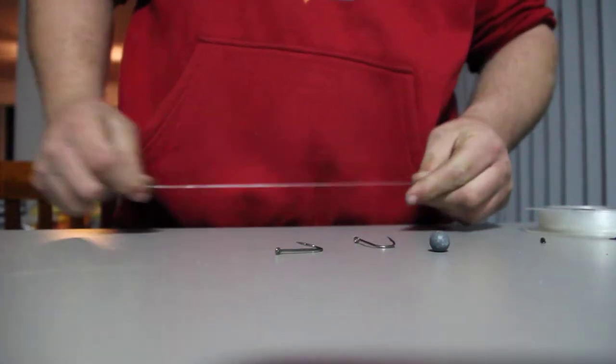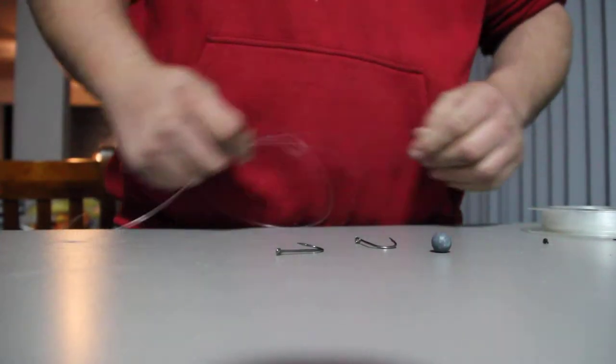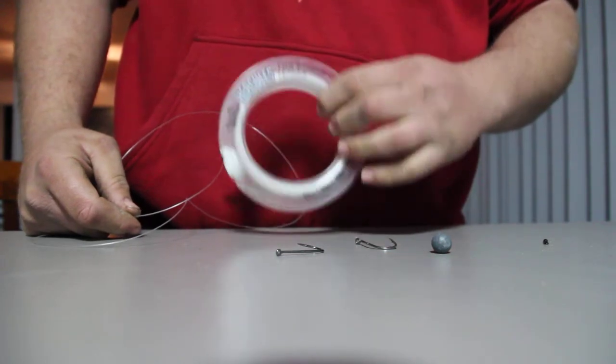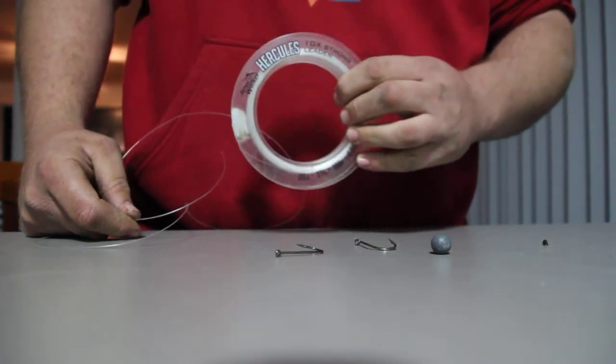Tonight I'm going to teach you how to tie a Snell Rig. It's pretty simple. We'll start off with some trace line—it's 80lb I'm running at the moment—just stops the fish from biting through your line.